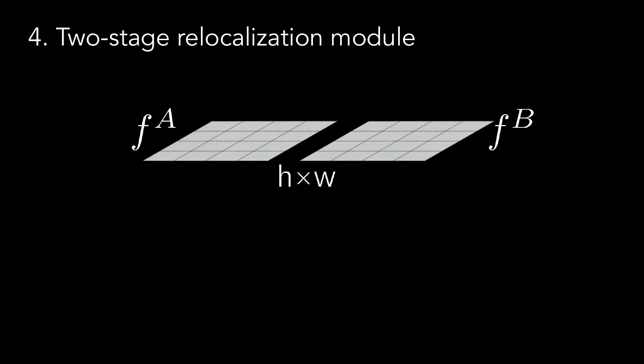These correspondences are established between densely extracted features on an H times W size grid, which has a subsampling factor of 8 with respect to the original image resolution, resulting in poorly localized correspondences. As localization accuracy is important for tasks such as camera pose estimation or 3D reconstruction, we propose a two-stage relocalization module that can improve the localization accuracy of the obtained correspondences.